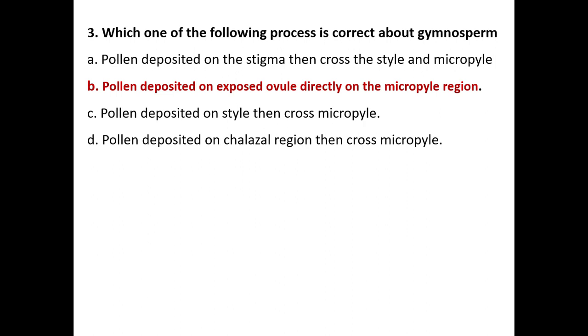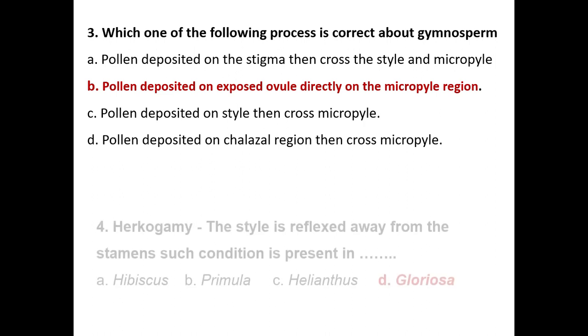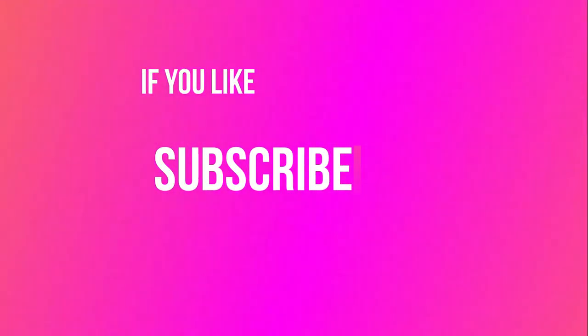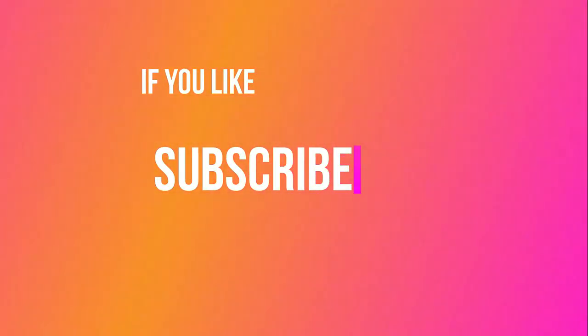The pollen is deposited on the exposed ovule directly on the micropyle region in gymnosperms. In herkogamy, the style is reflexed away from the stamens — such condition is present in Gloriosa superba. Thank you, and all the best.